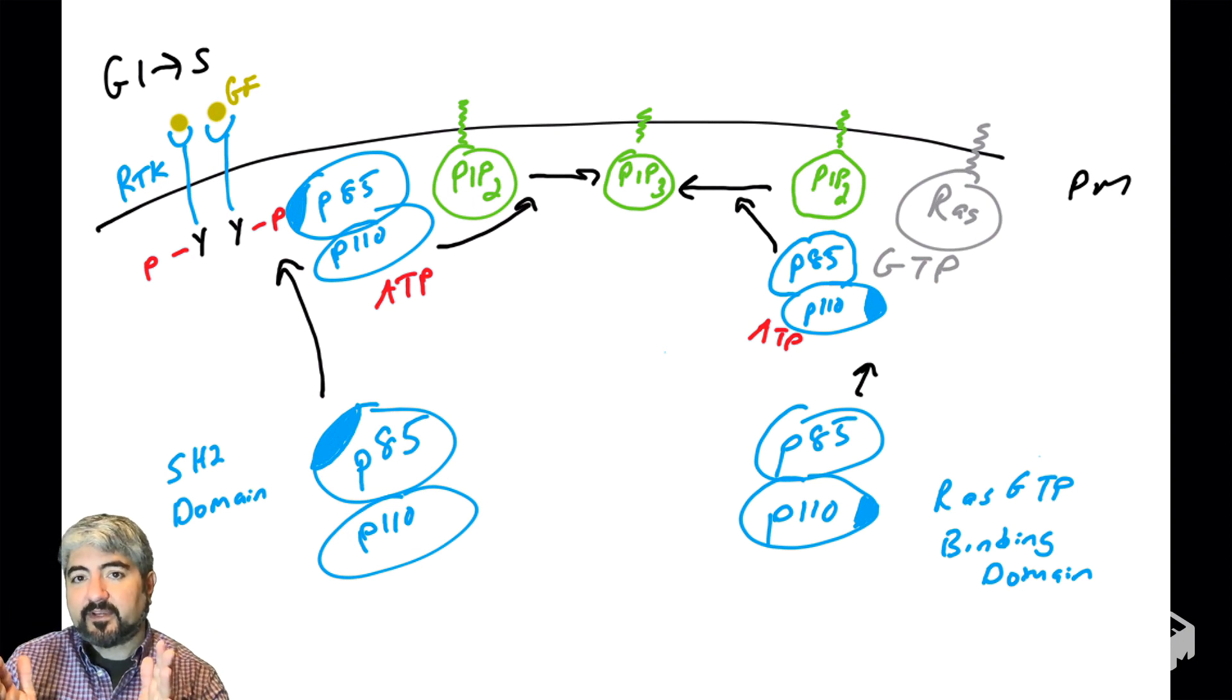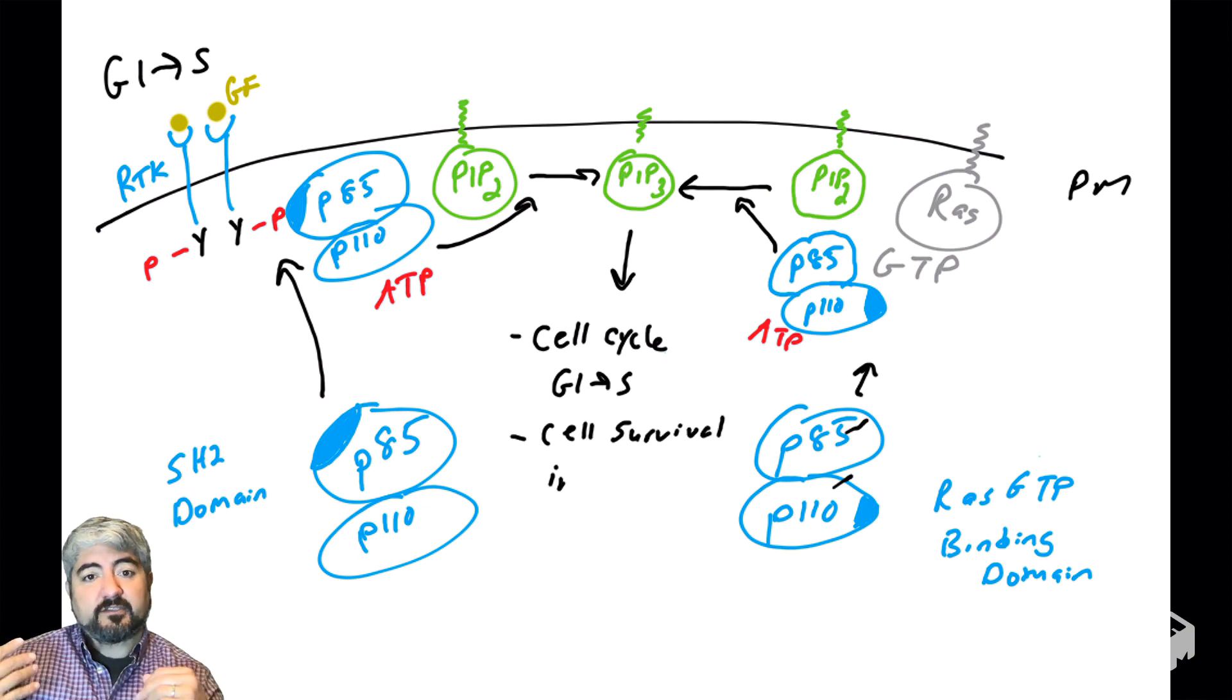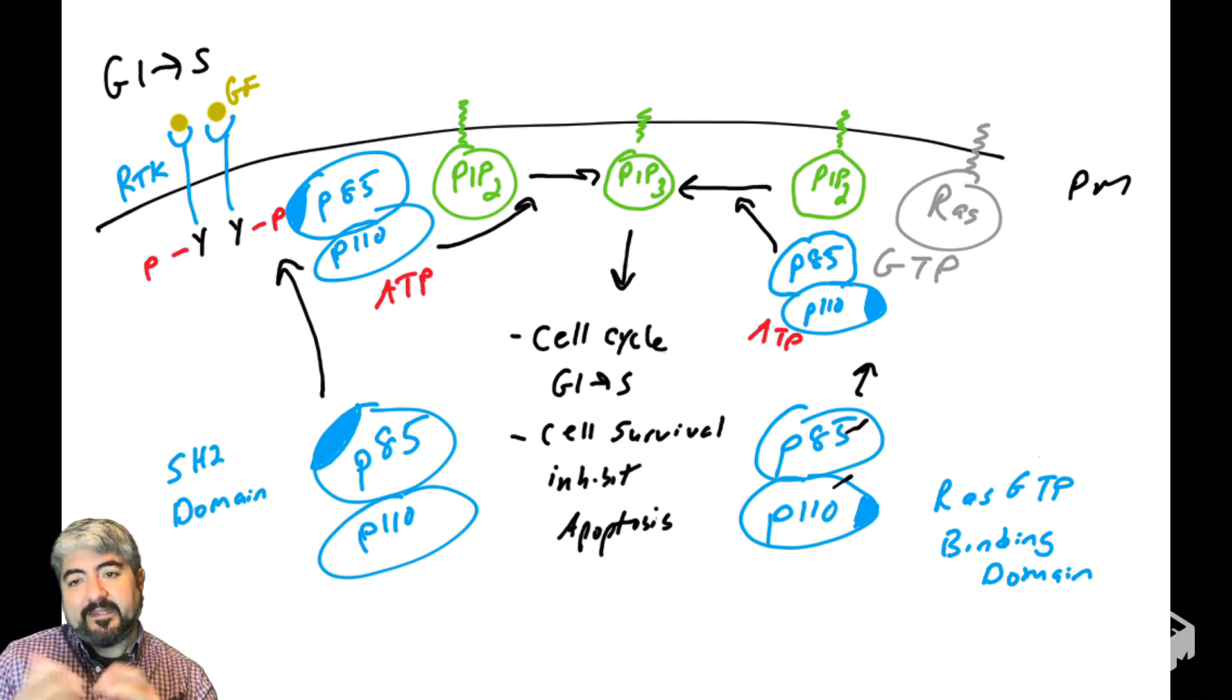These are two different ways that PI3 kinase can be regulated: either through the phosphorylation of tyrosines in receptor tyrosine kinases, or RAS GTP. There are other ways to regulate PI3 kinase—these are just two of them which are very important in cancer biology. But again, this is a normal cell. In a normal cell, when cells get the signal to grow, to go through the cell cycle, cells generate PIP3 by the ways I just showed you. Now that cells have PIP3, they can transmit signals to AKT, which we'll get to in a later video, and cells will go through the cell cycle. Cells will also inhibit apoptosis. They'll be in a pro-survival state. This is all mediated by PIP3, which is regulated by PI3 kinase.